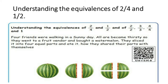Understanding the equivalence of 2 by 4 and 1 by 2: four friends were walking on a sunny day and became thirsty, so they went to a fruit vendor and bought a watermelon. They sliced it into 4 equal parts and ate it. First, they cut it into 2 equal parts; second, the 2 equal parts were cut into 4 equal parts. So the fraction is 2 by 4. First is 1 by 2 — that is half and half — and the second is 2 halves cut into 4 parts. So the fraction is 2 by 4.